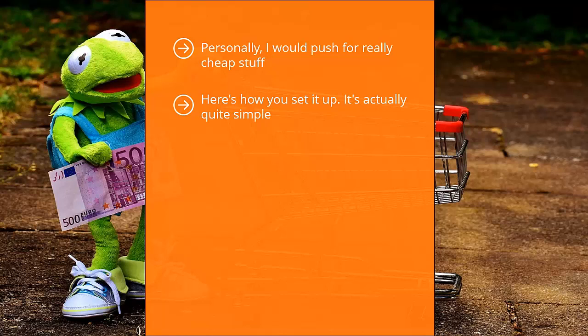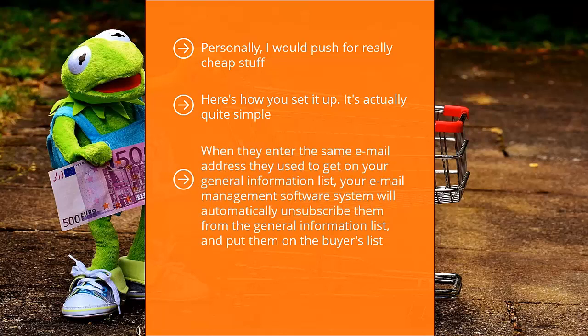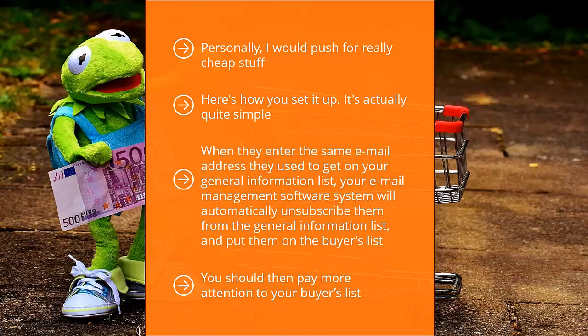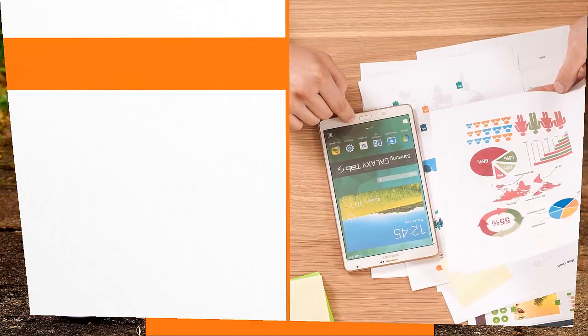Here's how you set it up — it's actually quite simple. When you send out updates to your general information list, these updates contain a link to your sales pitch. When people click that link, they see a purchase button. When they purchase, they are taken first to an email signup page. When they enter the same email address they used to get on your general information list, your email management software will automatically unsubscribe them from the general list and put them on the buyers list. This way, your tried and proven buyers won't see general list updates. You should then pay more attention to your buyers list, sending them more in-depth solutions or higher quality information to get them to buy higher-priced products or services.